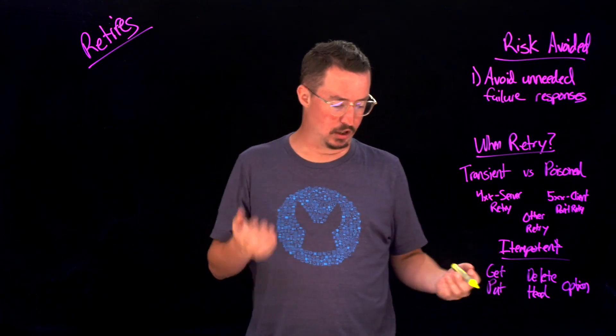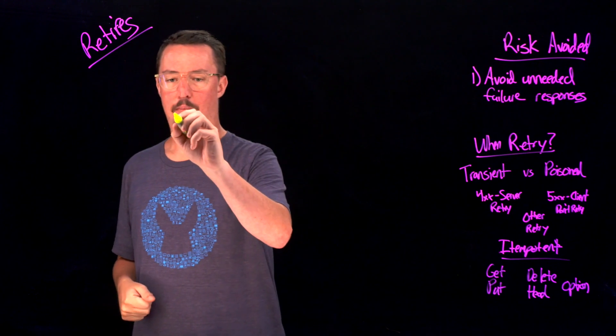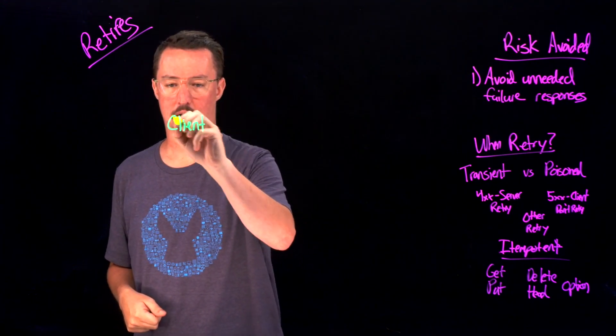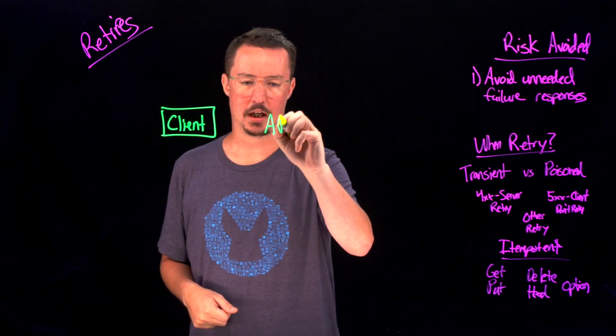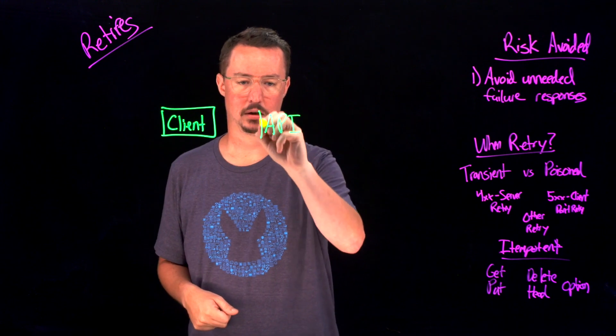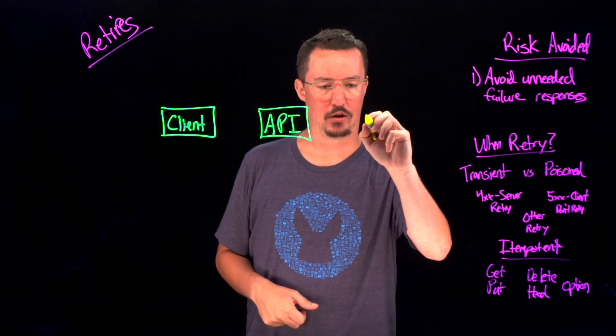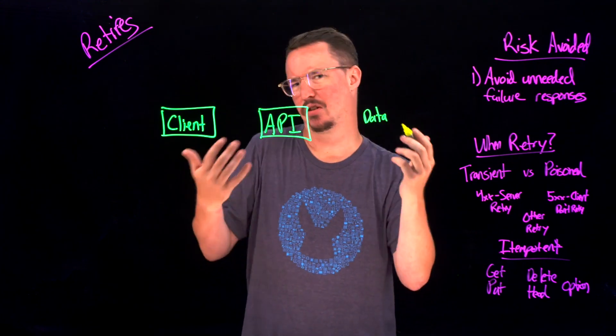Now with that being said, let's take a look at what this pattern looks like in practice. So if we think about our general structure, we have a client. That client is going to be calling an API. And that API is going to be calling some kind of a data source, or maybe it's another API, something along those lines.